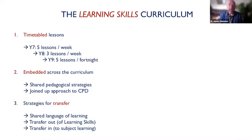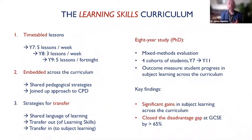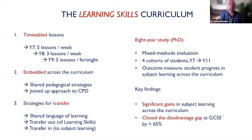I realized early on this was an incredible opportunity to capture in the most robust way possible, so I signed up to do a PhD - which turned out to be an eight-year study. We followed four cohorts of kids from Year 7 through to GCSE: one control cohort - the pre-learning-to-learn cohort with similar entry data - and three learning-to-learn cohorts. The main outcome measure was how they were doing in subject learning across the curriculum. We found it did help: results were incredible, with significant gains especially for young people from disadvantaged backgrounds.